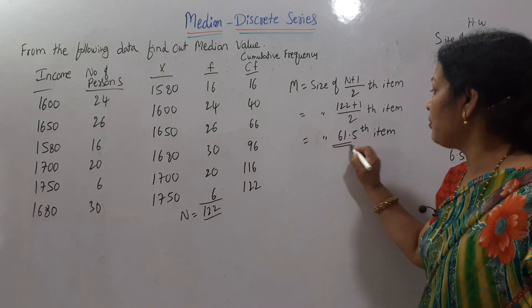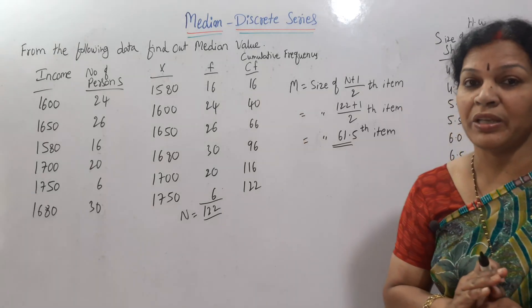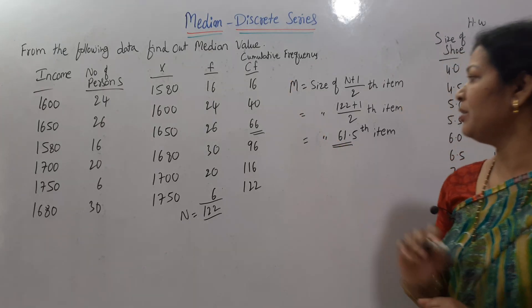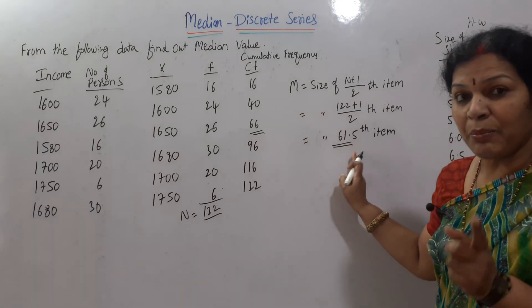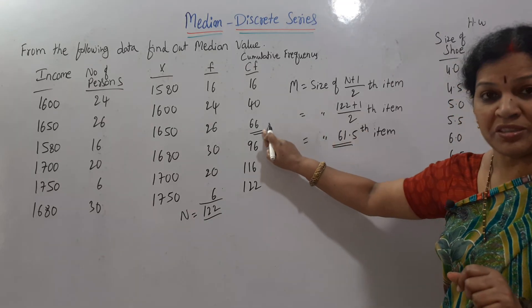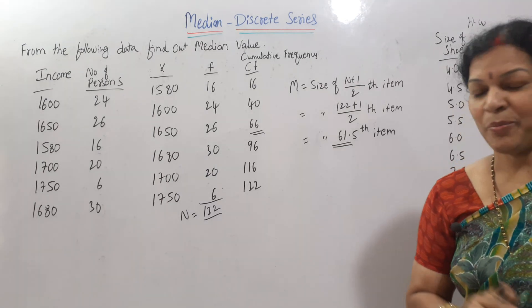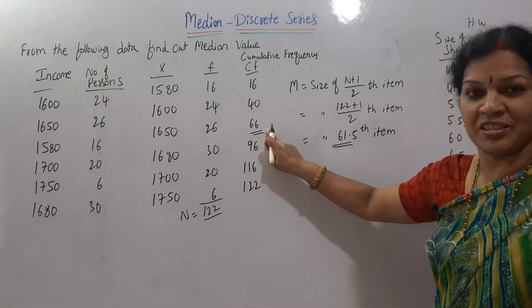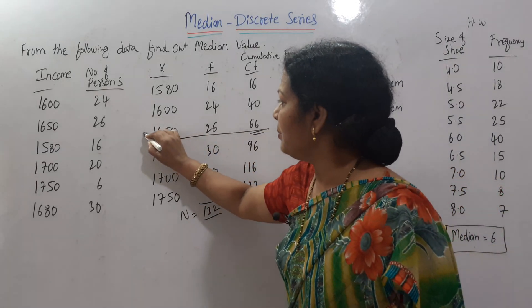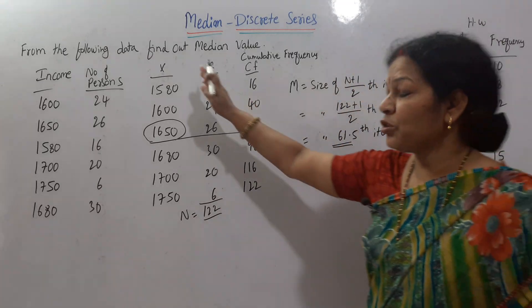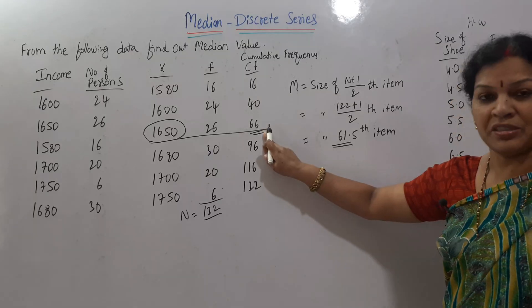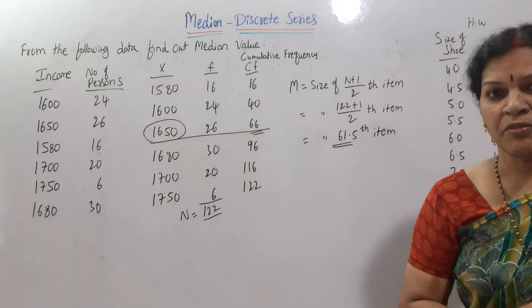The 61.5th item — where does it lie in the cumulative frequency? We look at the CF values. 61.5 means we need the value just above 61.5. The immediate next cumulative frequency value above 61.5 is 66. So identify the corresponding X value — the median is 1650.